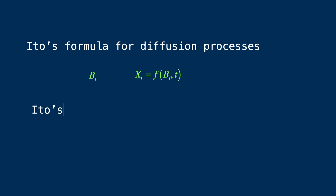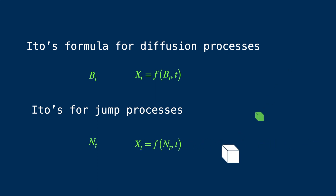We're going to do a similar thing for jump processes now, and in this video we're just going to focus on the simple Poisson process, which represents the number of jumps up to time t, and then some of its transformations. We're going to discuss cases of increasing complexity, but it's not going to be too complex because we're just going to be using Taylor series and dt precision-type arguments, so it's going to be relatively simple. It's just an introductory video in this series.